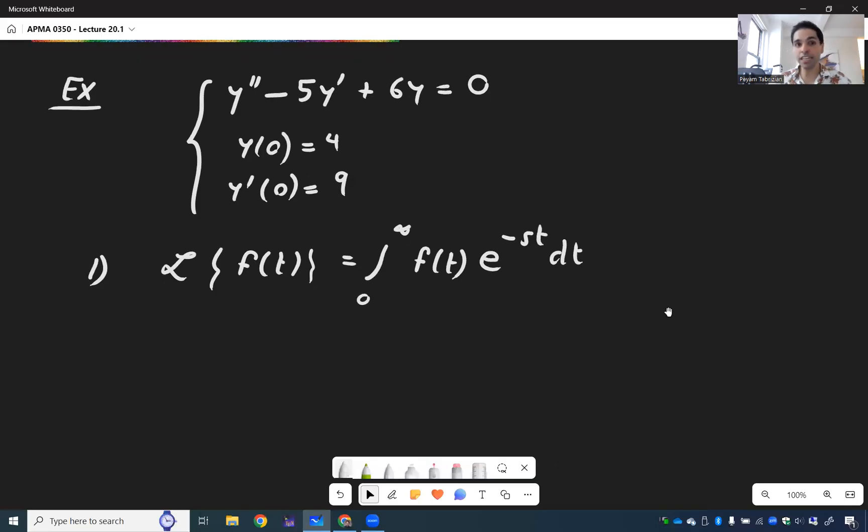What we really need are the two Laplace miracles. One that says the Laplace transform of the first derivative, L of f prime is s L of f minus f of 0.